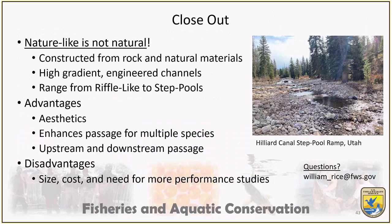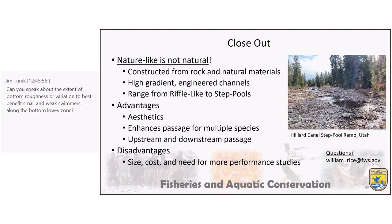In closing: nature-like is not natural — these are highly engineered structures ranging from riffle-like to step pools. Great advantages include aesthetics, enhancing for multiple different species, and getting upstream and downstream passage fairly easily. The disadvantages are size and cost — pretty much you need $300,000 to $700,000 to do one of these projects in our region. There's also a need for more performance studies. While we have good performance studies in a few places, more would be helpful — especially on how you space habitat boulders out. Thank you, and if people don't get their questions answered, I'm open to getting them by email. You can see my email on the lower left.